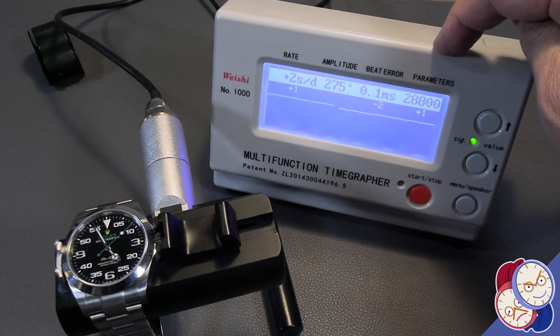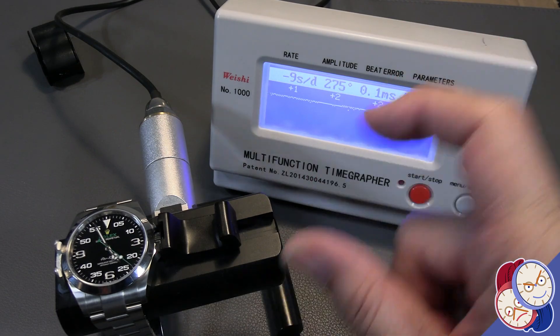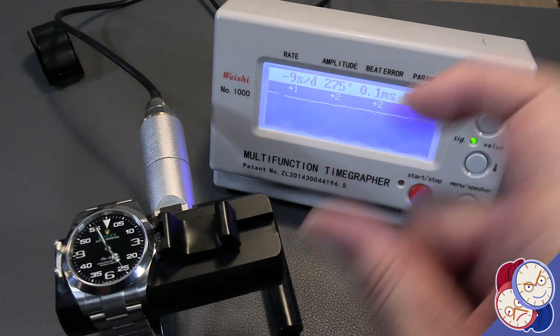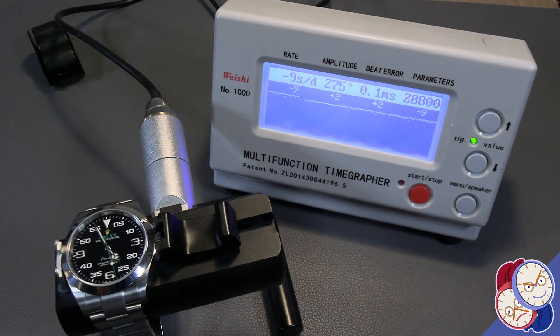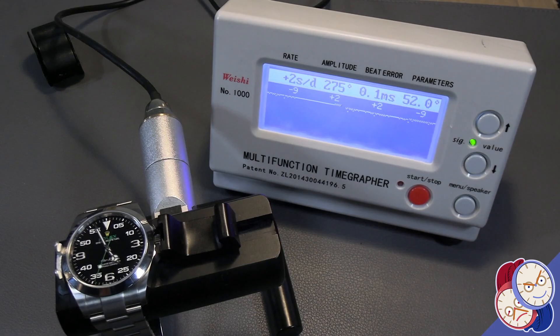And then the other figure says 52 degrees. That's what they call the lift angle. That's the amount of the arc of the swing of the balance wheel that the pallet fork rides on. So it's how much of the pallet fork's travel is part of the balance wheel's motion. And that's actually more for a watchmaker to discern and do something with.